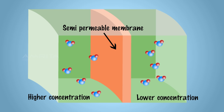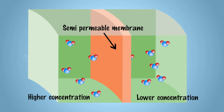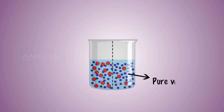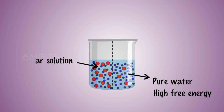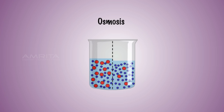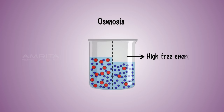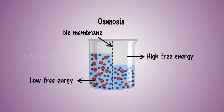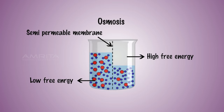Osmosis occurs due to the free energy of the solvent molecules in two regions. The free energy of the solvent or pure water is greater as compared to that present in the solution. So when osmosis occurs, the solvent moves from a region of its high free energy to a region of its low free energy through a semi-permeable membrane.